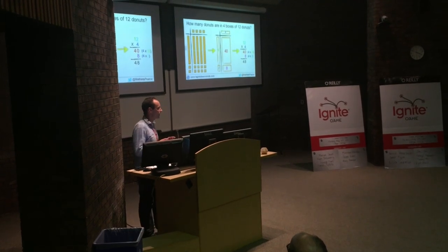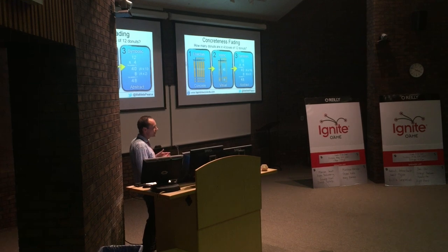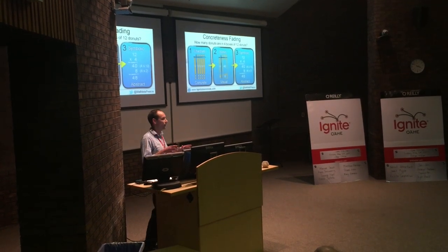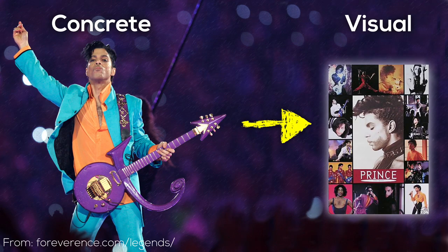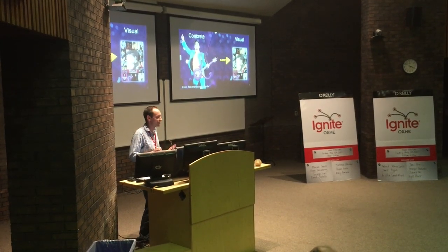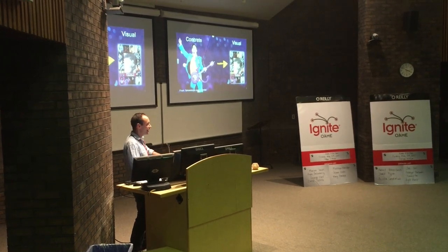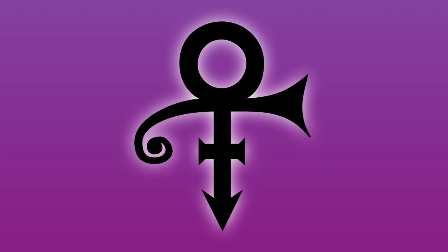What I'm talking about is called concreteness fading. As a secondary teacher, this was a brand new idea that could really have helped me when students were struggling in my courses. Even Prince understood the concreteness fading principle. He knew you had to come to his show and experience him in the flesh to get that memory and experience. And over time, you'd start buying posters and memorabilia that bring back those memories. And then, and only then, can that symbol actually mean something to you.